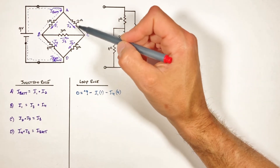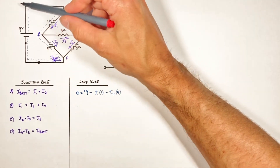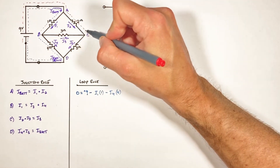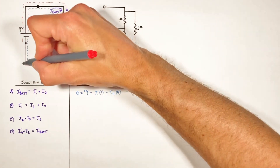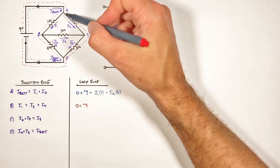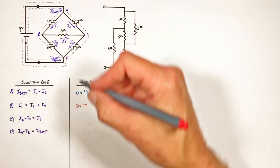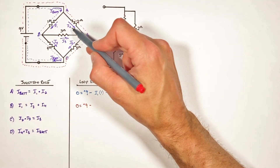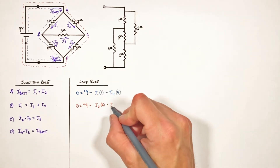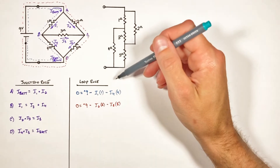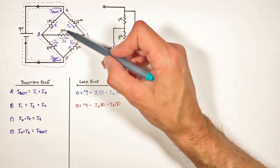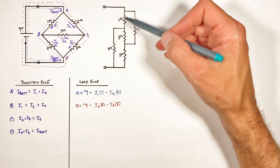Next we look around the outside of the circuit — starting here, up through the battery to junction A, then around the right-hand side to junction D and back. Applying the loop rule: 0 = +9 volts minus I2 × 2 minus I5 × 5. We've now used the loop rule for both the left and right sides of the bridge circuit.